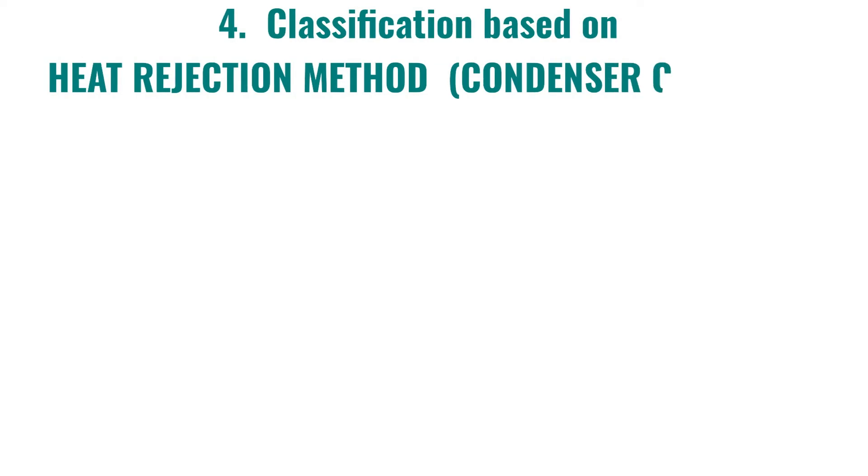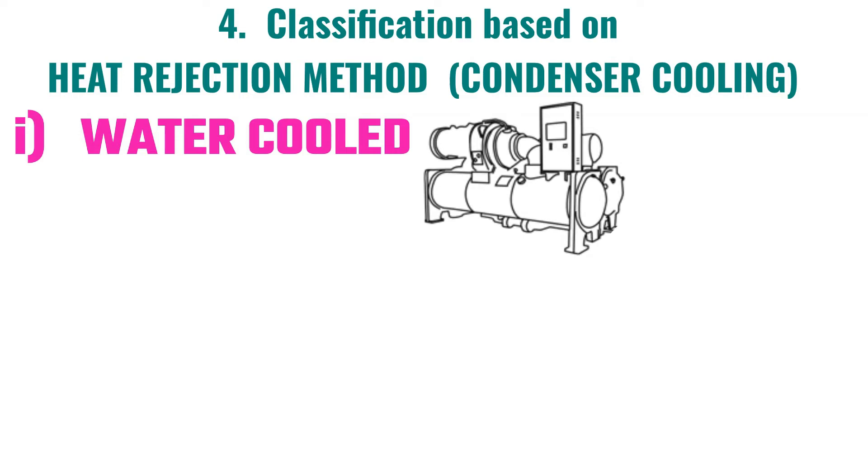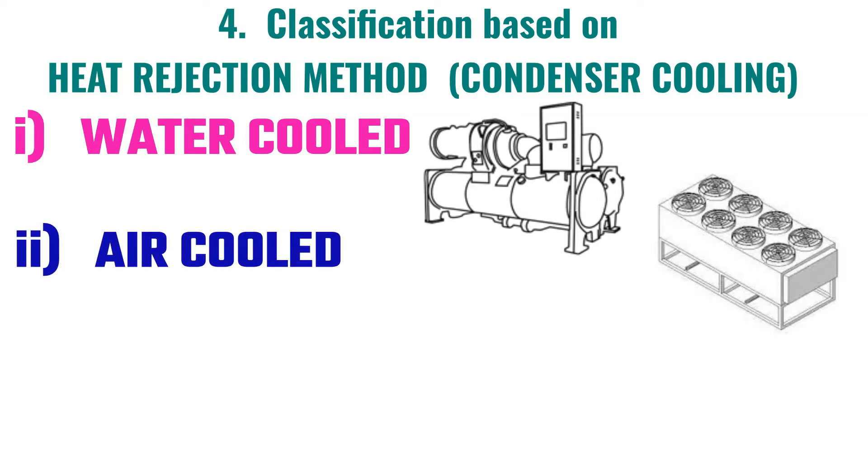Fourth classification based on heat rejection method: according to the cooling mode of condenser and on the basis of their functioning, cooling chillers can be divided as one, water cooling; two, air cooling; three, evaporative cooling.